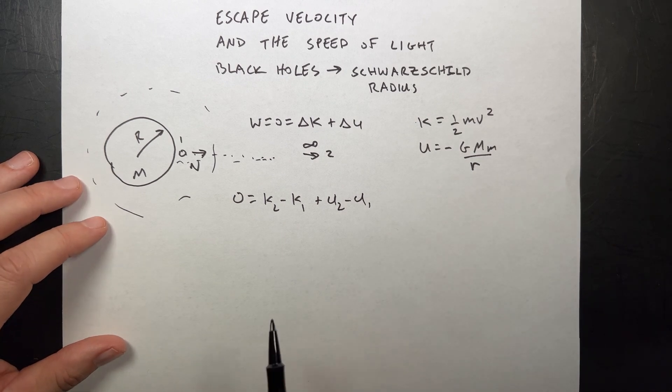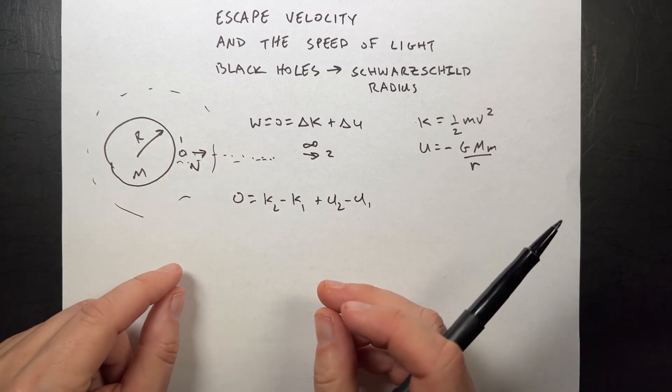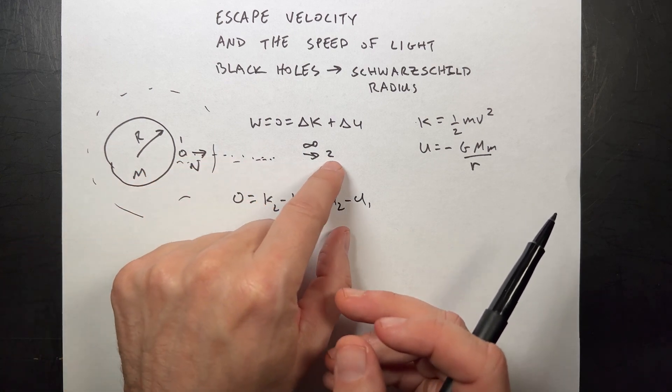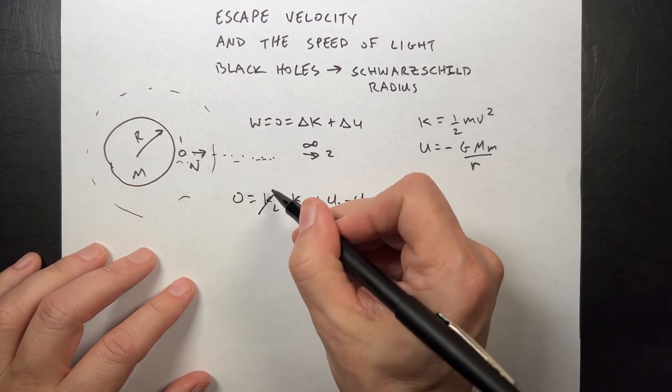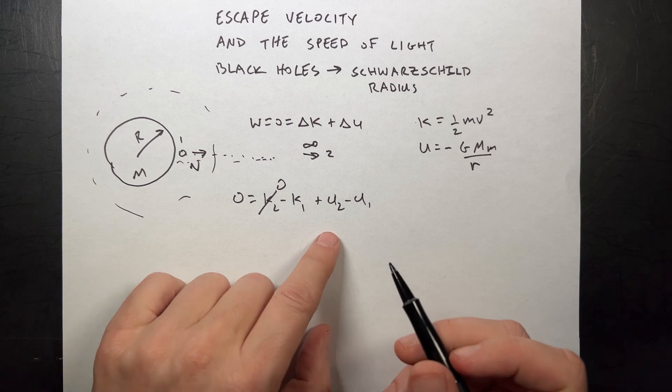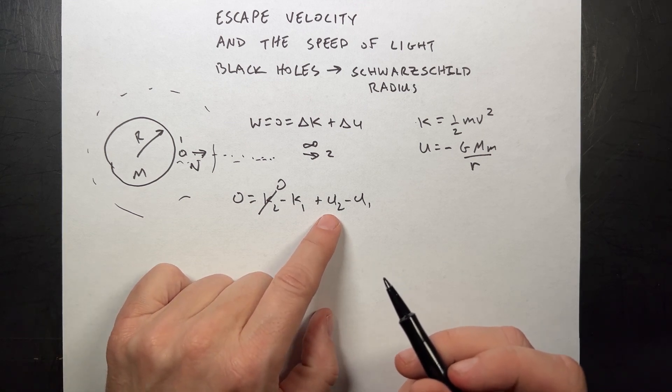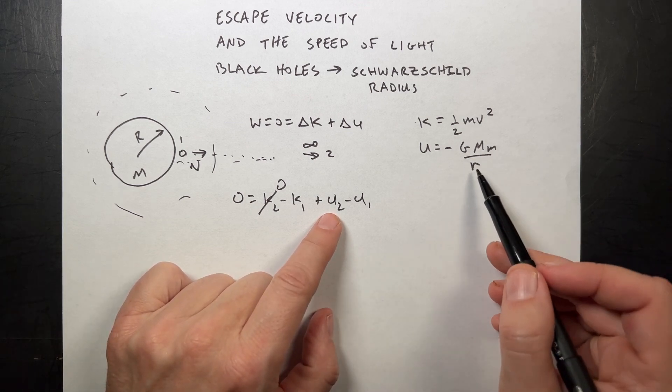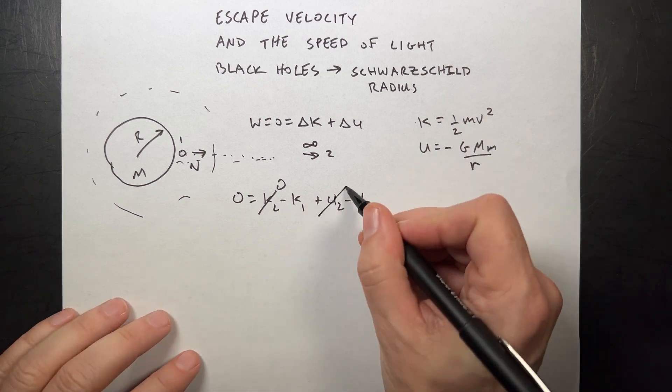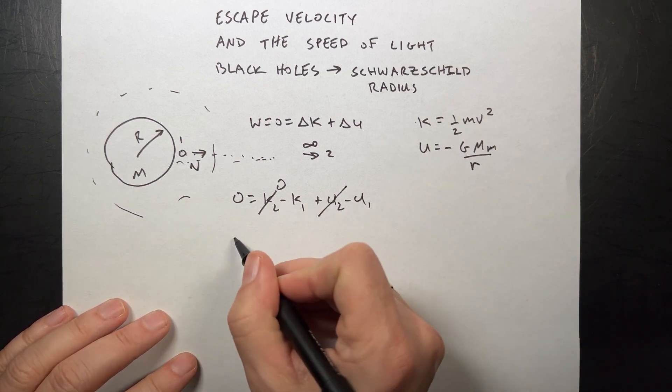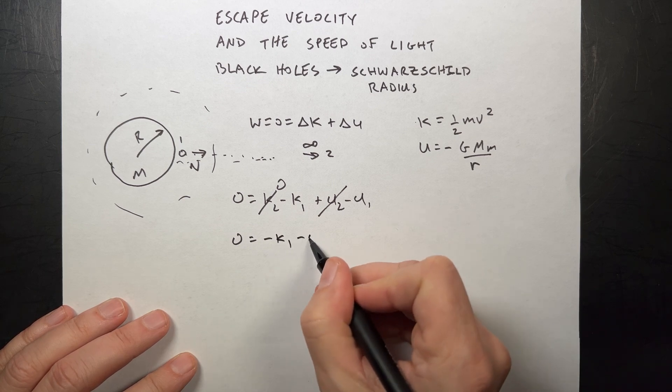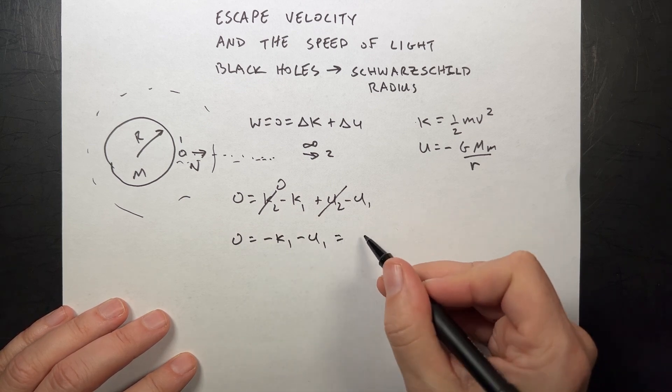Now, at an infinite distance away, it's just going to escape. So it's going to be an infinite distance away and stop. That means the final kinetic energy is zero, and we know that the potential at that point is zero, because as r goes to infinity, this goes to zero. So now I have zero equals negative K1 minus U1. Let's put in our values.